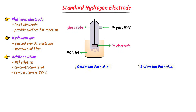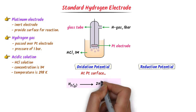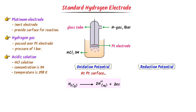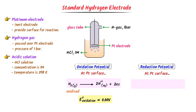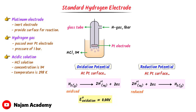At the platinum surface, hydrogen gas loses two electrons to form hydrogen ions, which go into solution — here hydrogen is oxidized and the oxidation potential E⁰(oxidation) = +0.00 V, because we assume both oxidation and reduction potentials are zero. For the reduction potential, hydrogen ions from the acidic solution gain two electrons at the platinum surface and form hydrogen gas — hydrogen ions are reduced and E⁰(reduction) = −0.00 V, because we assume its reduction potential is zero.